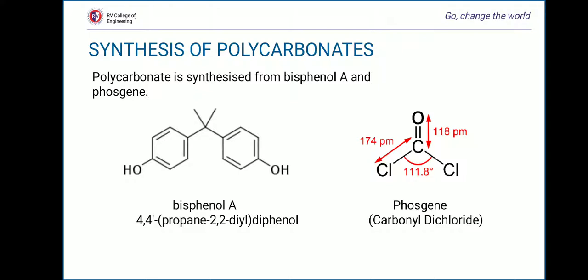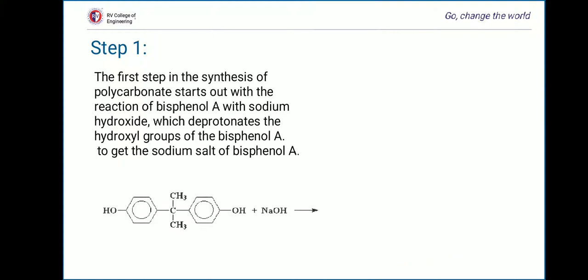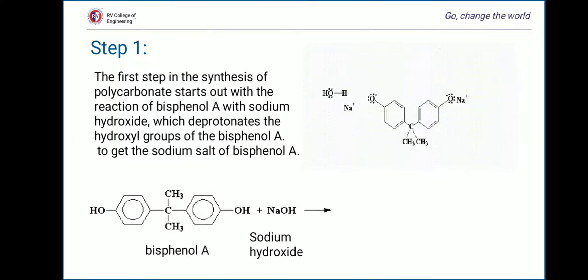The bond angle between the carbon-chloride bonds is 111.8 degrees. Now let's learn about step 1 in the synthesis of polycarbonates. We are only going to focus on bisphenol A right now and will get back to phosgene later. The first step in making a polycarbonate is treating bisphenol A with sodium hydroxide. The hydroxyl group swipes a proton away from the bisphenol A. When this happens, the hydroxyl group becomes a water molecule and the bisphenol A alcohol finds itself in the form of a sodium salt.